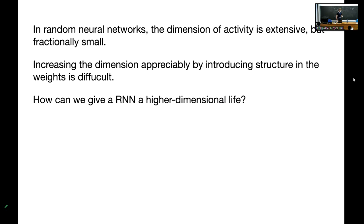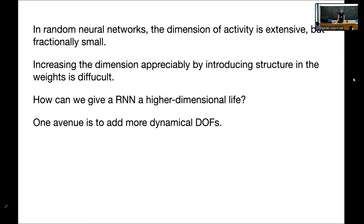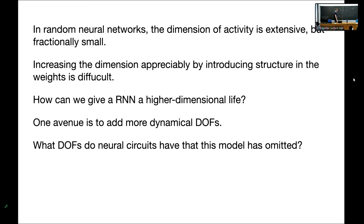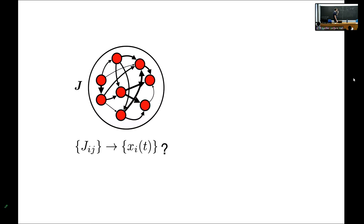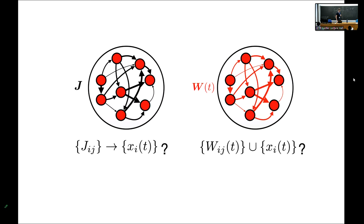This raises the question of what degrees of freedom neural circuits have that this simple model has omitted. There's a very obvious one: synapses. In real neural circuits, synapses are not fixed couplings J but undergo plasticity in response to neuronal activity. Synapses are dynamical variables in their own right, along with neurons. So instead of asking how fixed weights map onto the X's, I can ask a more ambitious question: if I have time-dependent weights W, what is the joint dynamics of synapses and neurons together?